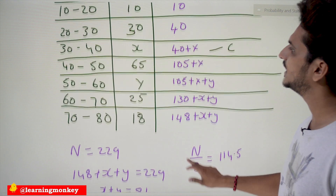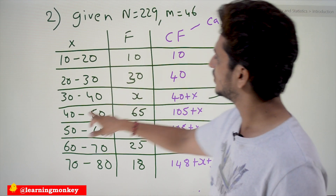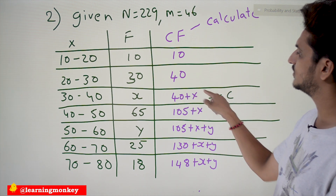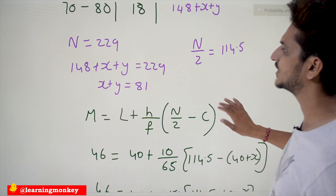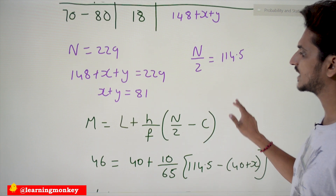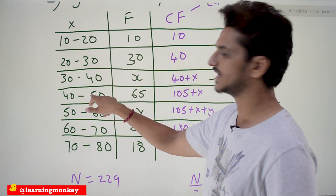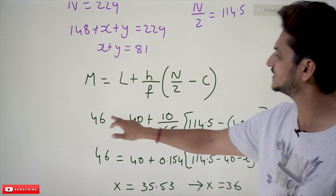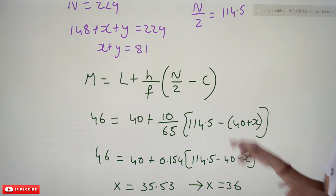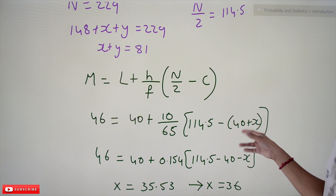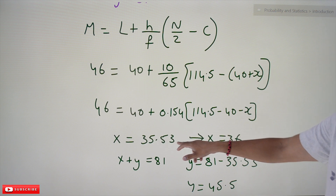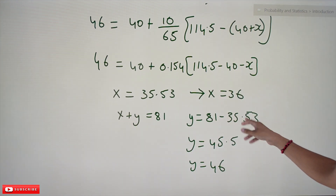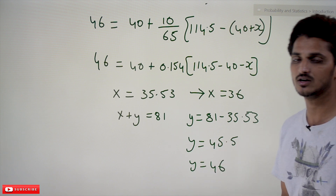Since median M = 46 is given, the median class is identified as the 40–50 class. The C value (cumulative frequency before the median class) is 40 + X. Substituting into the formula: 46 = 40 + (10 / 65) × (114.5 − (40 + X)). Solving gives X = 35.53, so we take X = 36. Substituting into X + Y = 81 gives Y = 81 − 36 = 45, so Y = 45 (approximately 46). This is how we calculate X and Y.